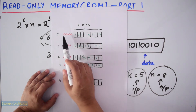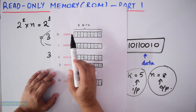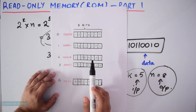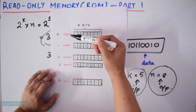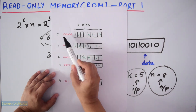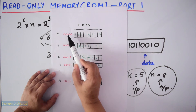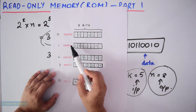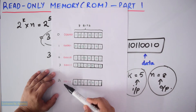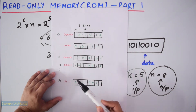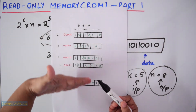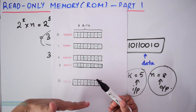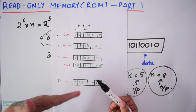For each memory location, the 5 address bits will make the address. So the first location will be 00000, the next 00001, and so on up to 11111. This is random data that I have taken.